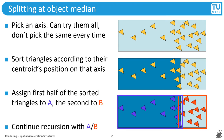The second option is splitting at the object median, which is more computationally involved. Pick an axis — try them all in sequence, avoiding the same axis every time. Sort the triangles by their centroid's position on that axis, then assign the first half to group A and the second half to group B. This leaves two child groups differing in triangle count by at most one.